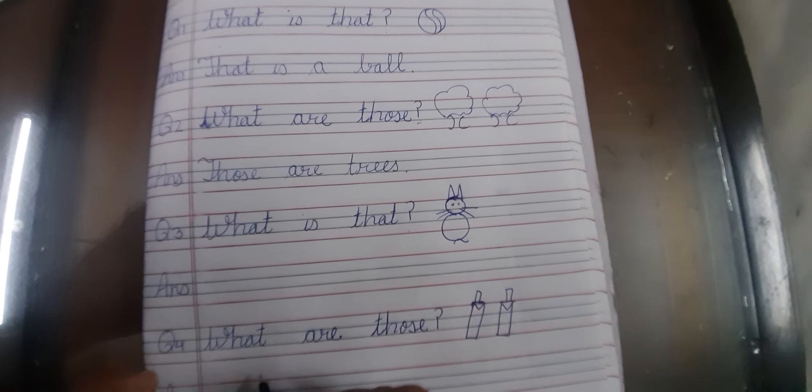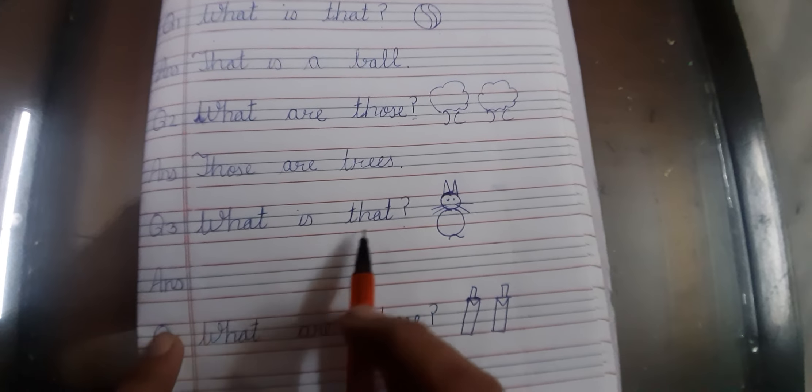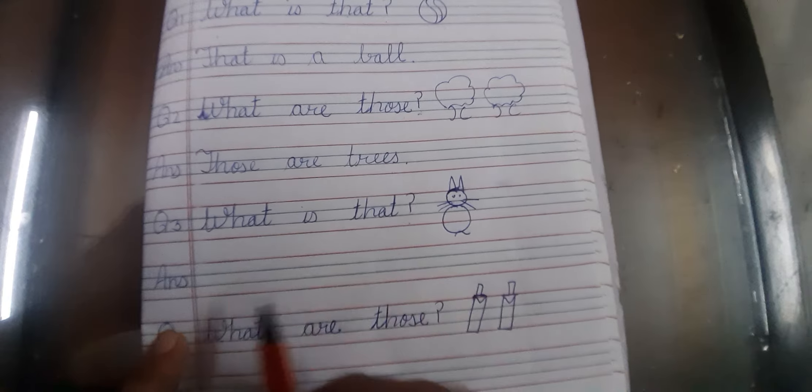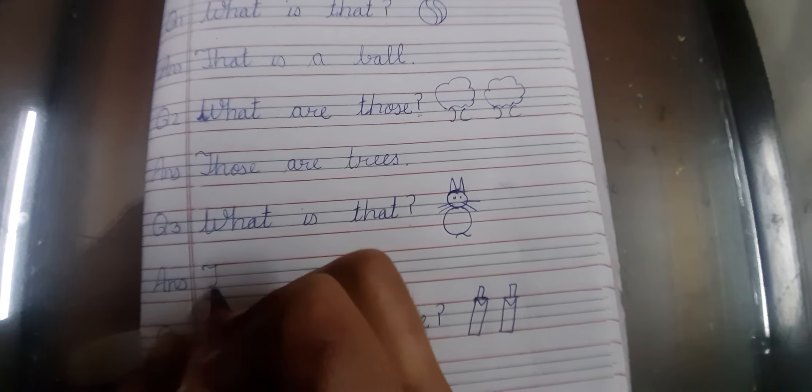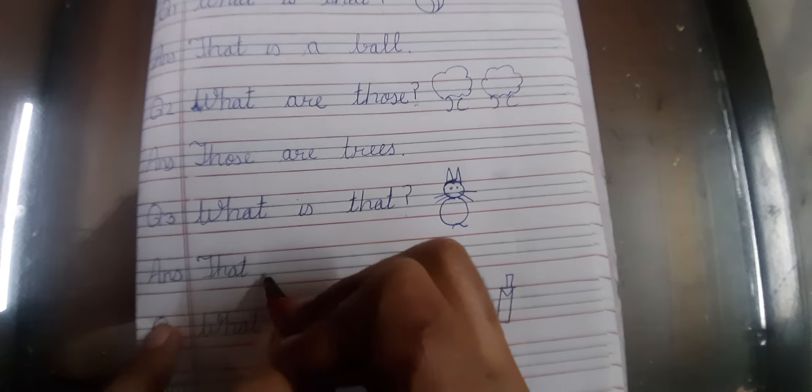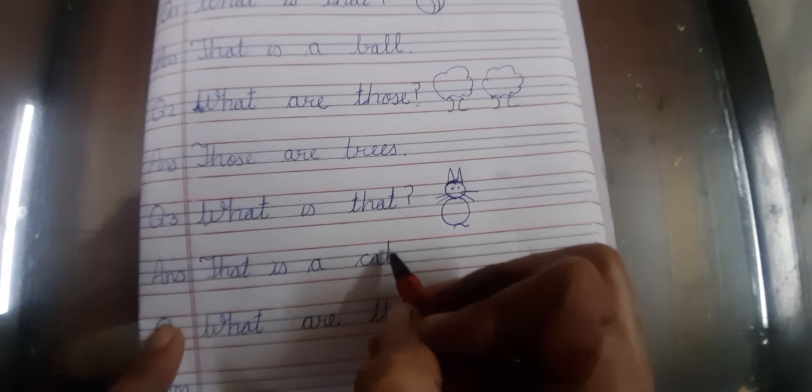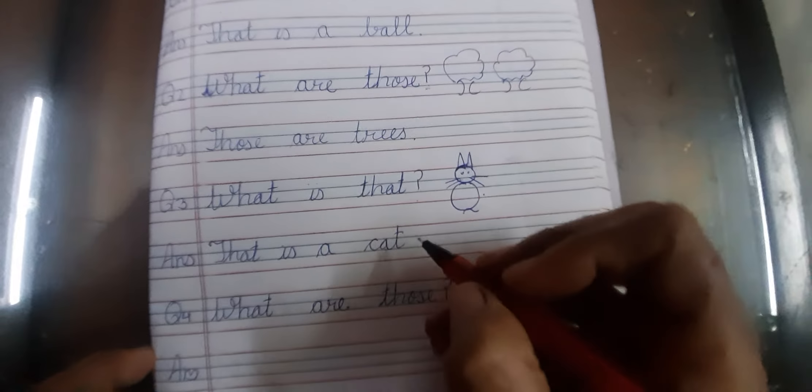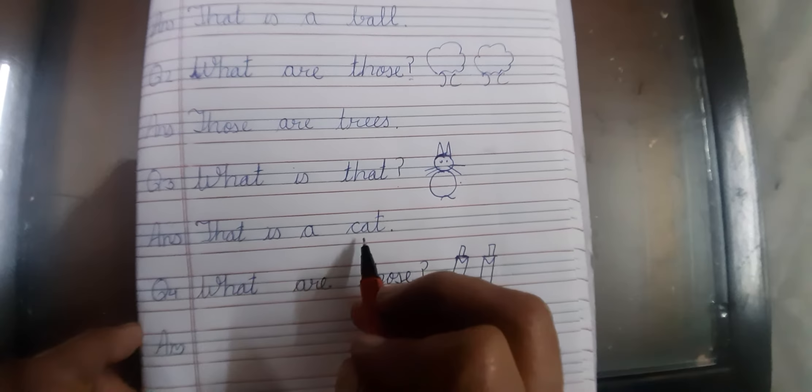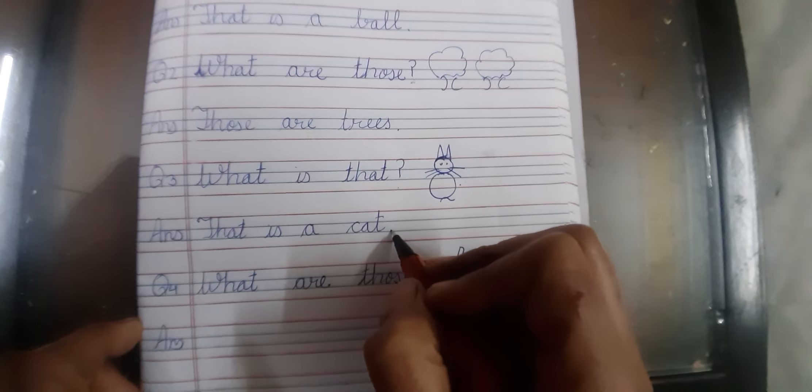Now our third question is, what is that? We write down. That is a cat. That is a cat. Whenever sentence is complete, we write down full stop.